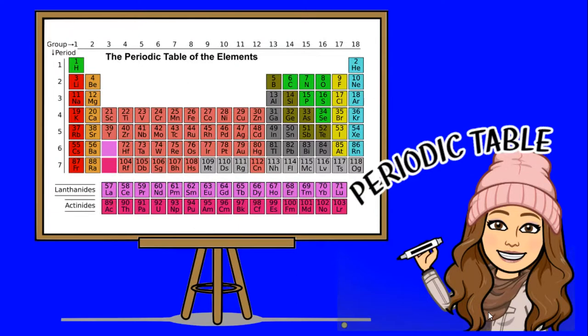The elements are listed in the periodic table according to their atomic mass. The modern periodic table is also organized to easily see how different elements relate to one another, with elements of similar properties grouped together.